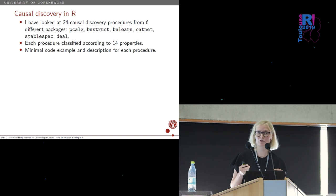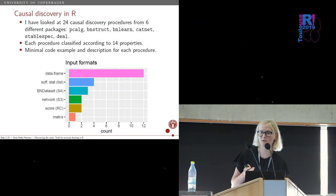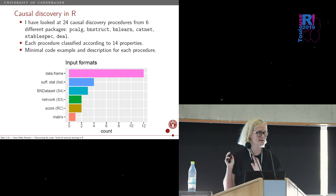I tried to classify each procedure according to some properties that I thought was relevant for how people should do causal discovery in practice. And then I've provided some minimal code examples running on the same underlying data examples, so it's easy to get started and to try out a lot of different procedures. Just to show you why this might be nice, here I plotted the input formats from my 24 different procedures. Half of them take in data frames, that's very nice. But the other half takes in something they came up with themselves.